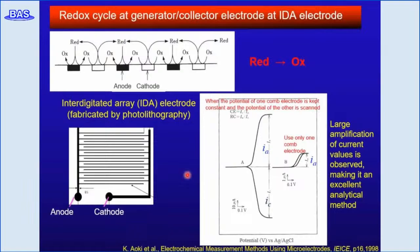One example is shown here. Only one electrode shows the anodic current, but when the IDA electrode is used, the redox cycle takes place and large amplification is observed. Therefore, the IDA electrode is applicable for electrochemical analytical use.